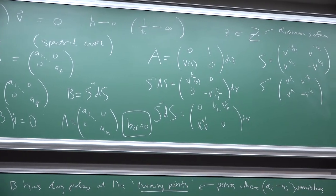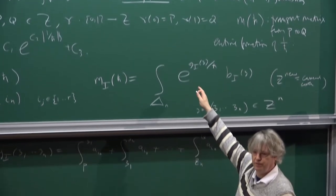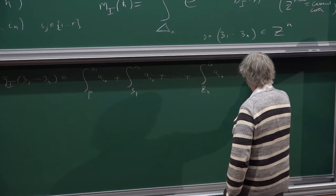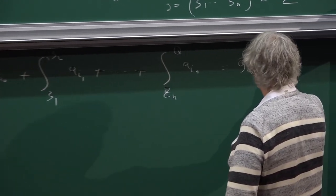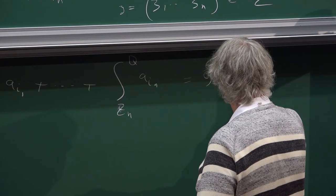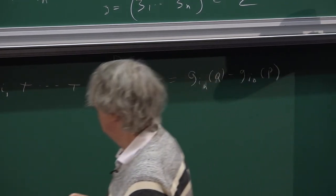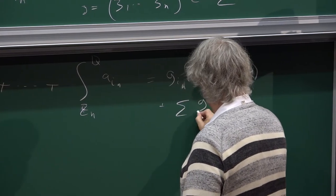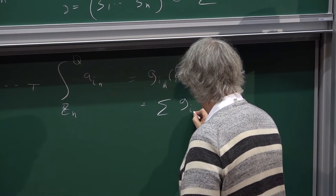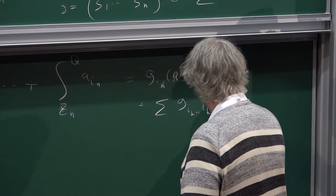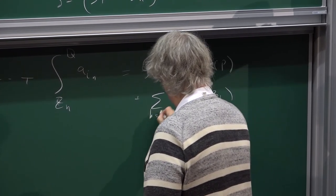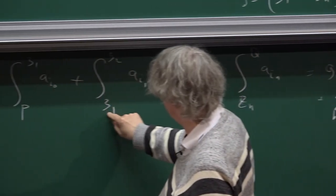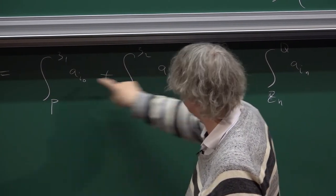This is the main function which controls the exponential growth of our problem. It's useful to notice that this is also equal to G_{I_N} of Q minus G_{I_0} of P. If we choose primitives G_I of the A_I, then we have something like that, plus a sum of G_{I_{K-1}, I_K} of Z_K. If you vary one of these points Z1, the variation of the function G is given by the difference of A_{i1} and A_{i0}.